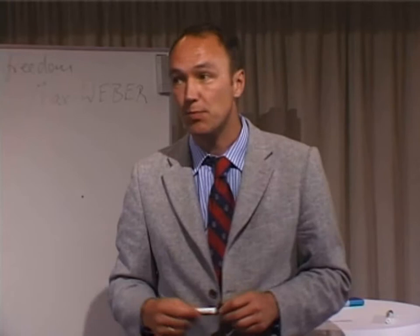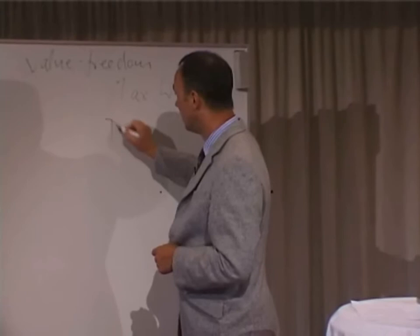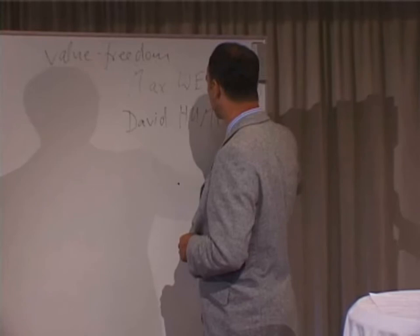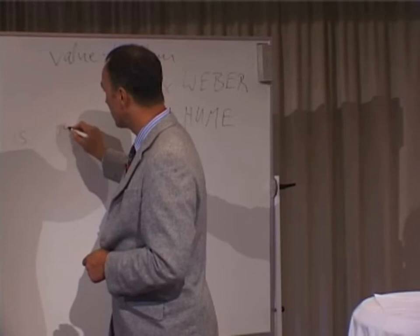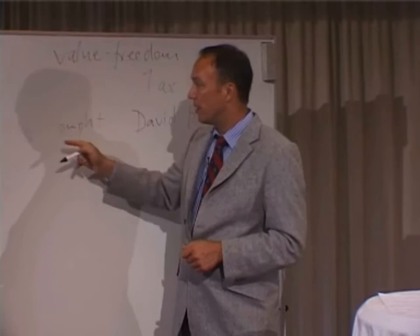Rather, science in a strict sense is about 'is' propositions rather than 'ought' propositions. So we have here another name, namely David Hume, British philosopher of the 18th century, who stressed the distinction between 'is' and 'ought' propositions.